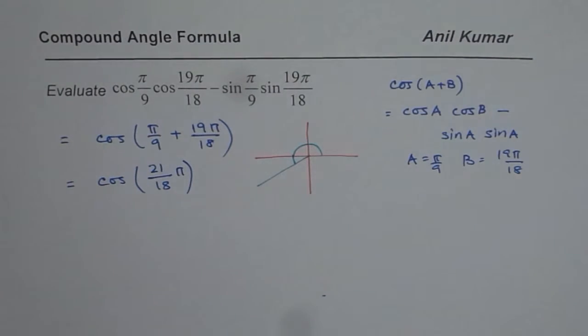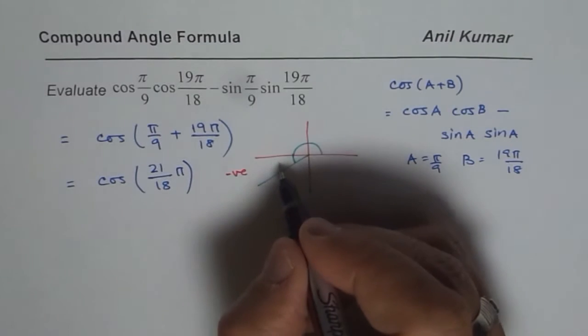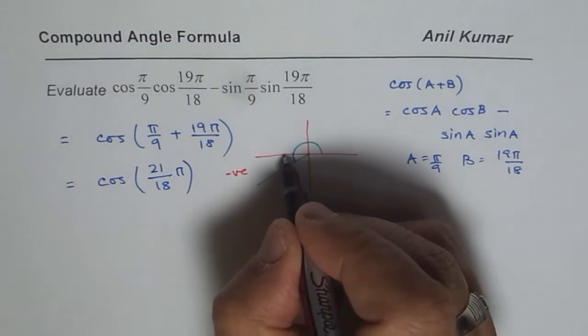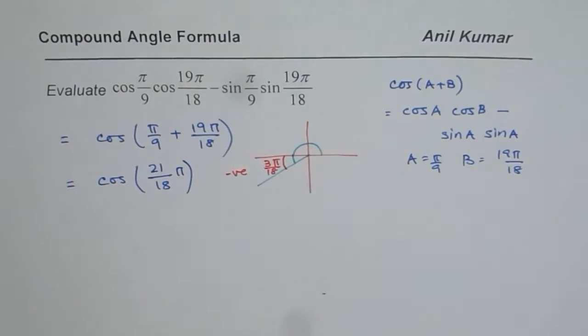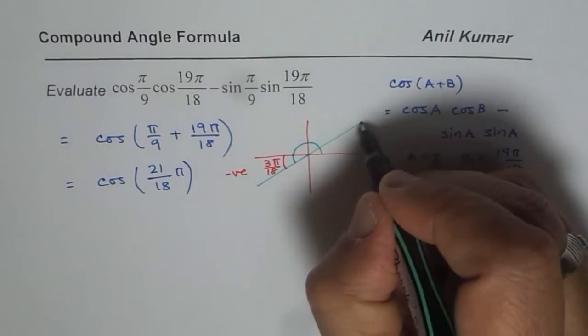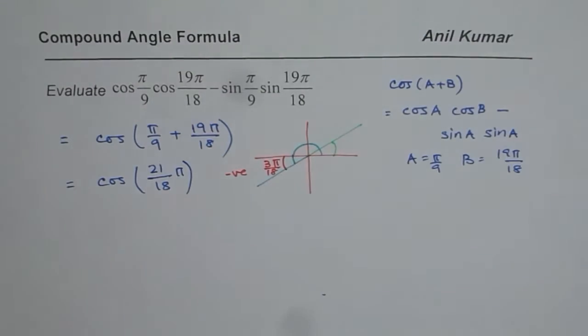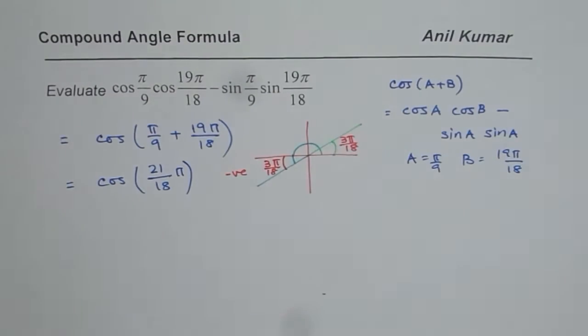Since you are in coordinate 3, you expect a negative value here. And this acute angle here is 3π/18. So we have acute angle which will be equals to 3π/18.